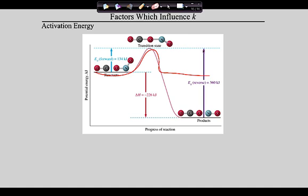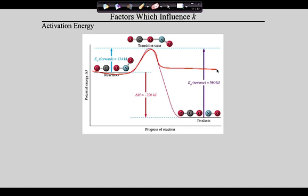Endo or exothermic doesn't change the rate of the reaction. Right now we're thinking the way to change the rate of the reaction is give them more energy so more collisions get over the hump. But there's another way to make these reactions go faster relative to the hump: drop the hump. And how do we do that? With a catalyst. You learned that last year. You may want to put 'catalysts' in your notes right now because we're shifting gears.